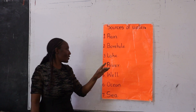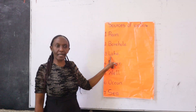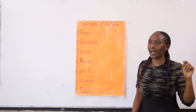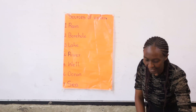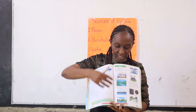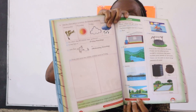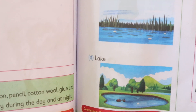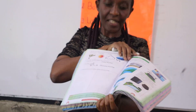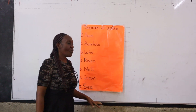Now I have another source of water which is lake. Can you say lake? Lake. Yes, lake is another source of water. I have a picture here to show you a lake — it's down here. Can you see the lake? Yes. That's a lake. So lake is another source of water.